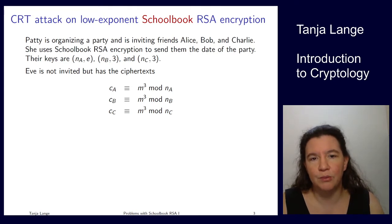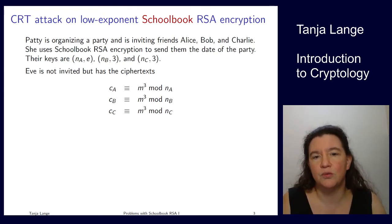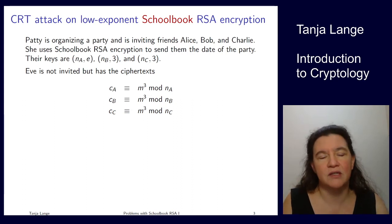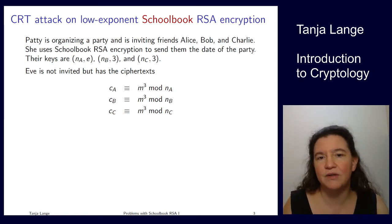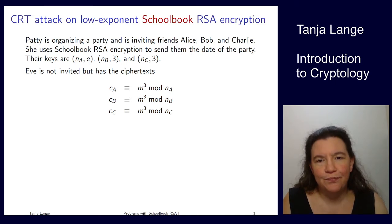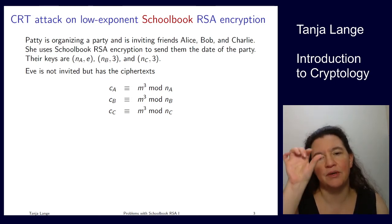They all are using exponent 3, because they are nice to the person encrypting to them, so they don't want to cause too much effort in the encryption function. And so all of them have exponent 3, and then they have their very private n_A, n_B, n_C. So there is nothing wrong in isolation. However, if Patty is sending the same information to all of them, say she is sending them the date of the party, or the time of the day, and whatever address, then she is using the same message in all three positions.